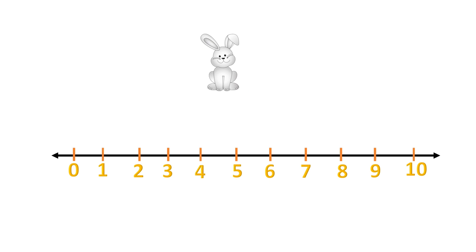Let's try one more: seven add three equals. Start at zero and make one big jump all the way to seven, then we will make three small jumps.